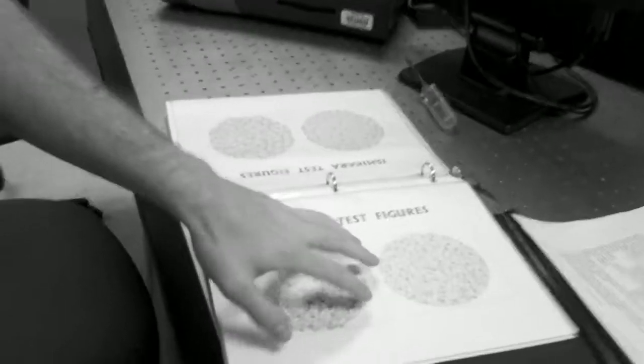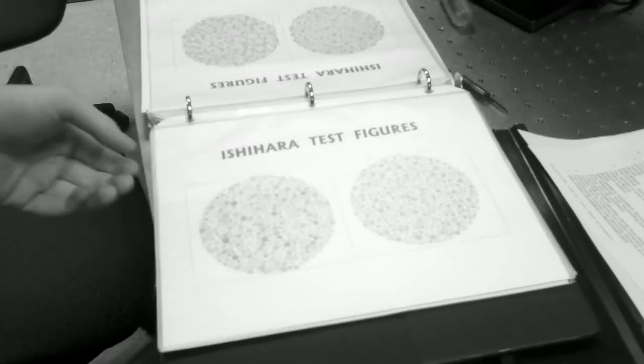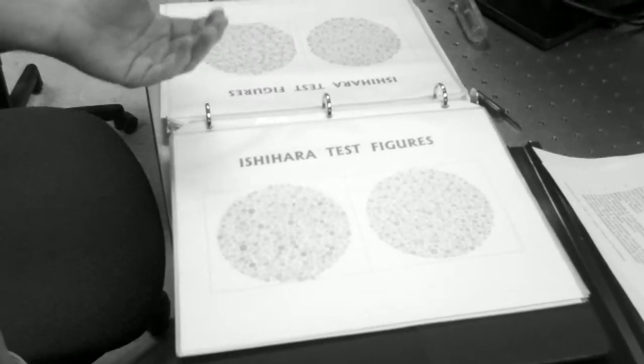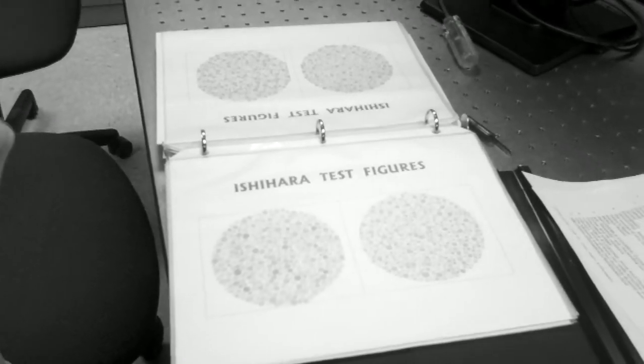For this part of the lab, we were told to calculate our color vision using the Ishihara test figures. As you can see here, these monochrome images, basically you count the dots and divide by the Ishihara factor, the coefficient. Once you do that, you get a number that, the higher the number the better. I got a 93, which means I am not colorblind.